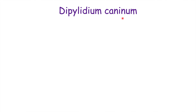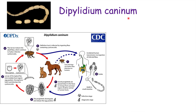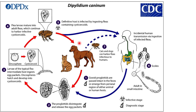The next tapeworm species is Dipylidium caninum. A dog or a cat is required to have this tapeworm — they are infected with Dipylidium caninum and release proglottids in egg packets into the environment. In addition to cats or dogs, fleas are also required. After egg packets are released into the environment through feces, a flea larva ingests the egg packets and oncospheres hatch, developing into cysticercoids within the flea larva.